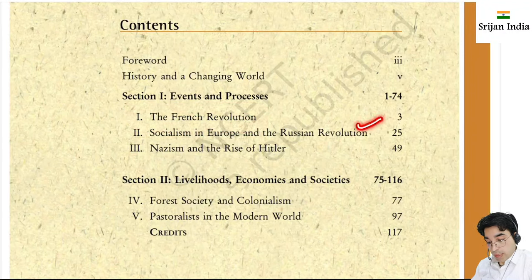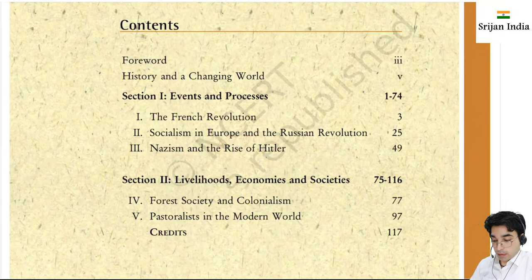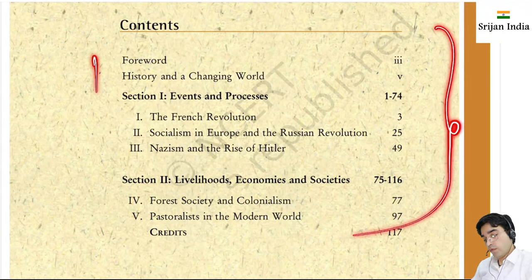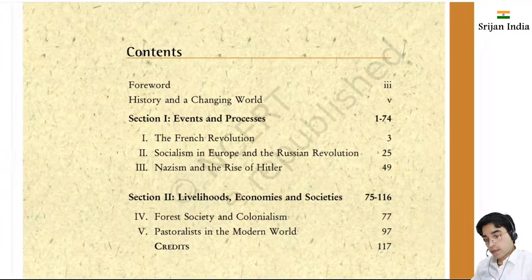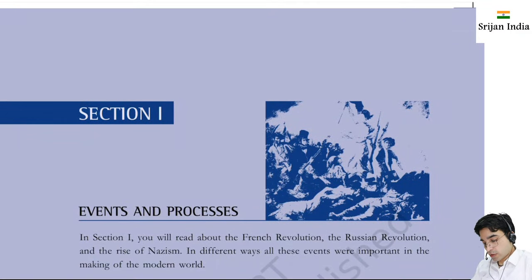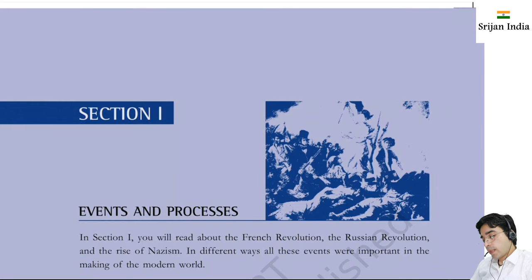Then we will see the Russian Revolution - this is very important. After that we will see Nazism in Germany and the rise of Hitler. Then we will see forest society and colonialism and pastoralists in the modern world. So let us start - we will look at chapter one first, which is about section 1: events and the process.